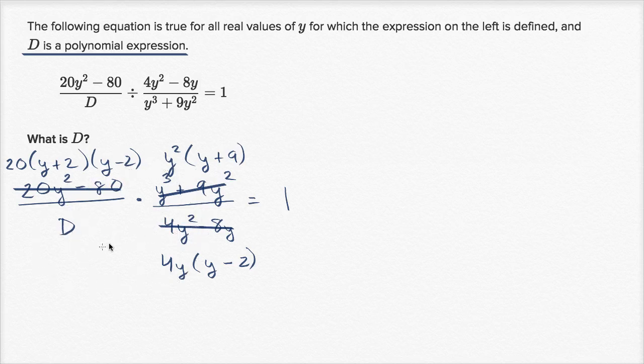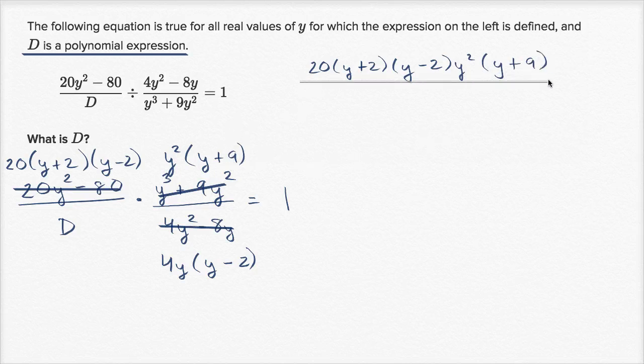If we were to multiply everything together, we would end up getting, in the numerator we'd get 20 times y plus 2 times y minus 2 times y-squared times y plus 9. I'm just multiplying all the numerators, and that's going to be over the denominator. I would have whatever the expression d is times 4y times y minus 2, and that's all going to be equal to 1.